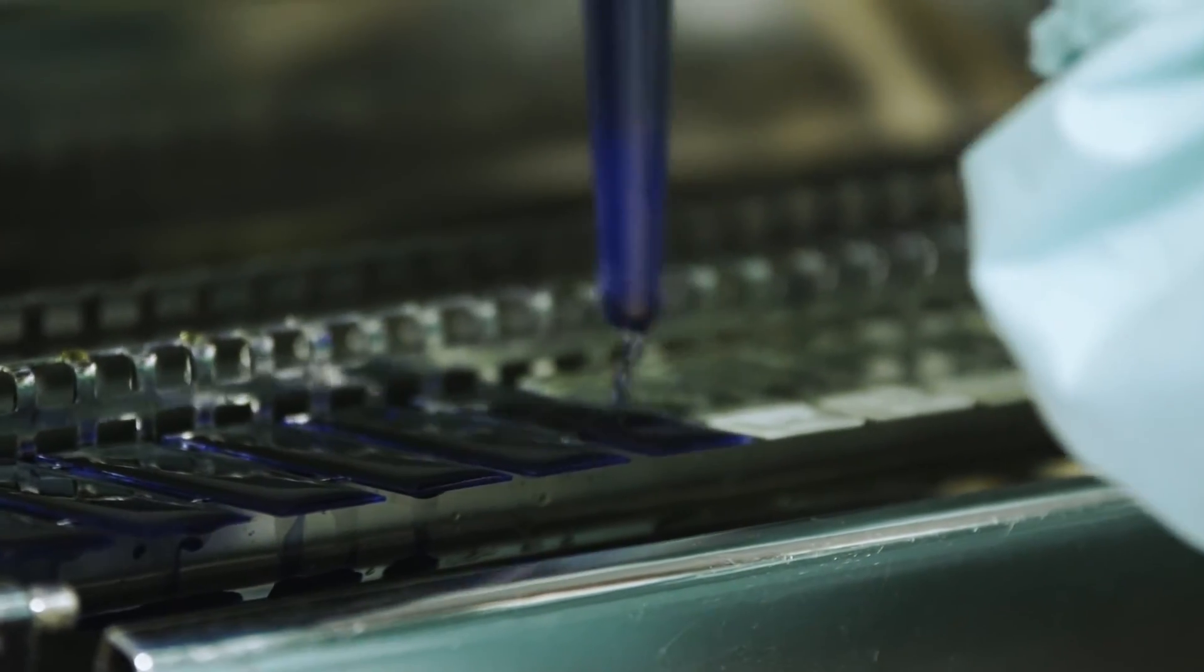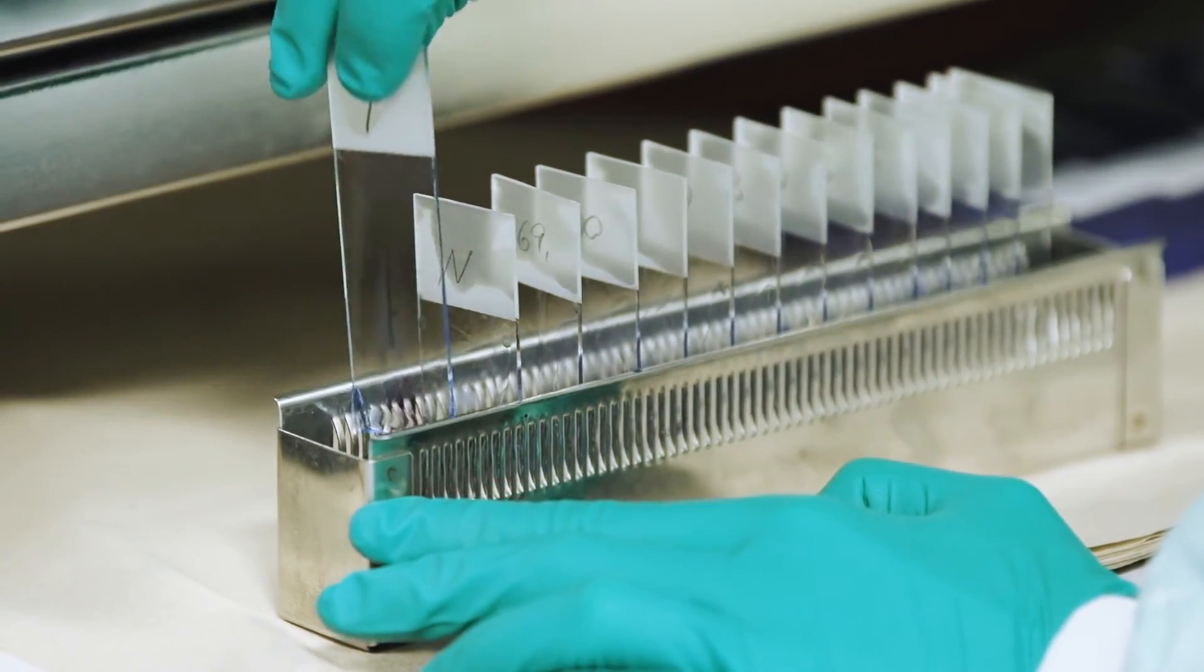Next, use potassium permanganate, methylene blue, or even ordinary ink for counter staining. Allow the prepared samples to air-dry.